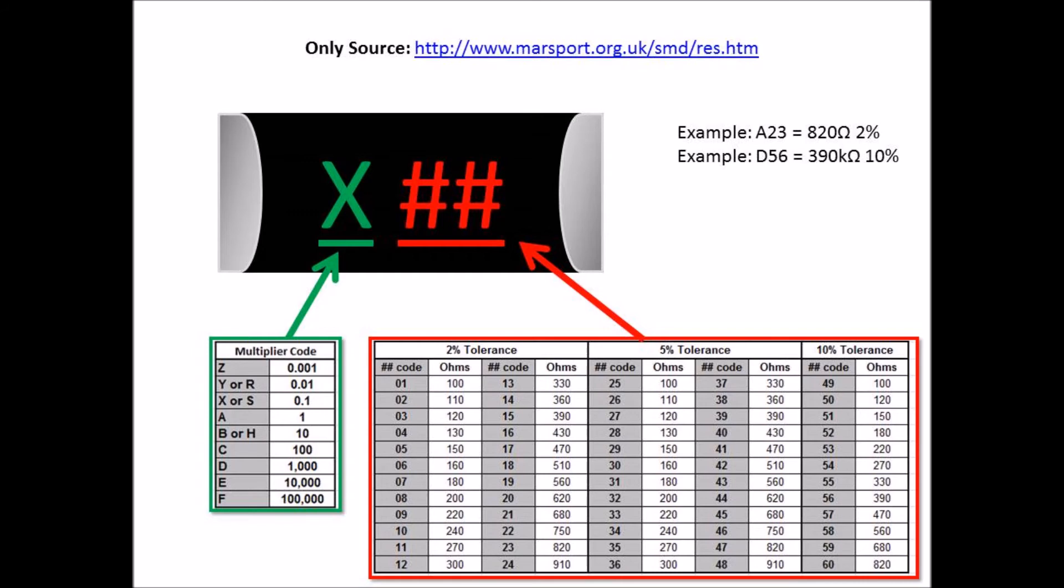And then it also set the 2% tolerance. Now the second example is D56. D is the multiplier of 1,000, 56 cross-references to 390, so it would be 390 kilohms at 10%. And I show the chart below so you can cross-reference it yourself. This is the only site that I found that at.